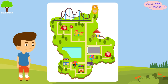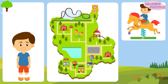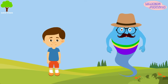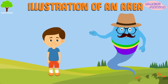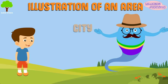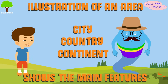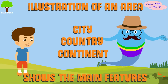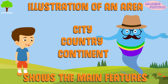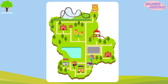See this park map? It tells you where you've been, where you are, and where you're going. A map is an illustration of an area such as a city, a country, or a continent showing its main features. It's a drawing that gives special clues about an area.